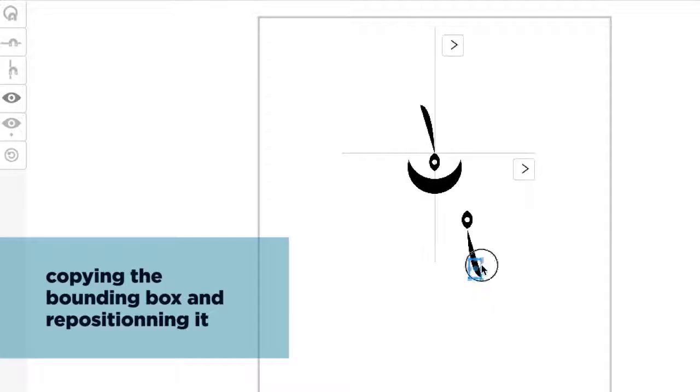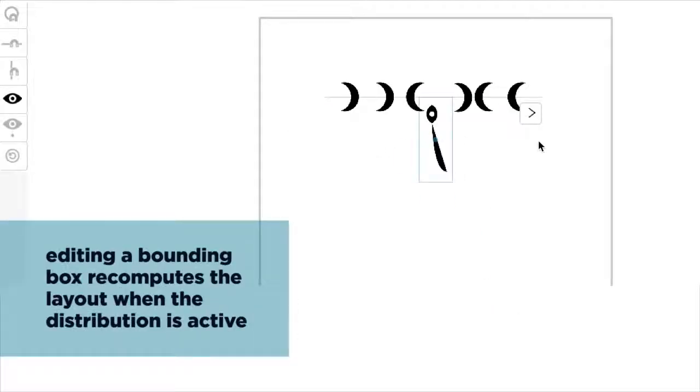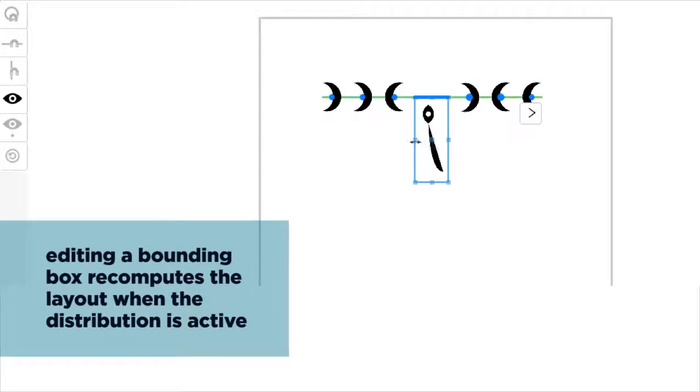Like tweaks, bounding boxes can be copied and pasted onto other objects. The bounding box also affects the even distribution of objects on a sticky line.